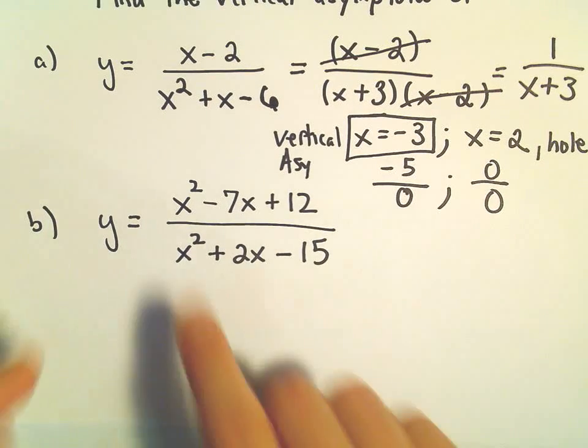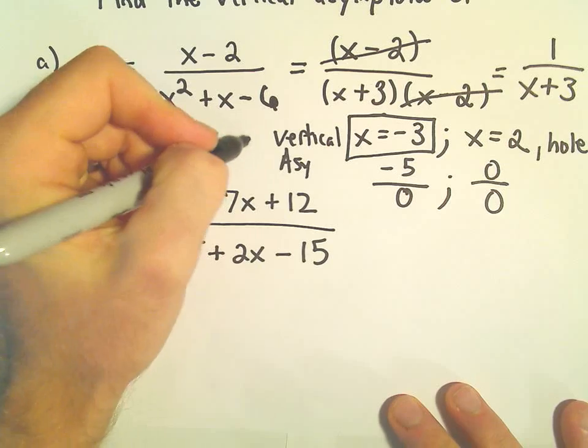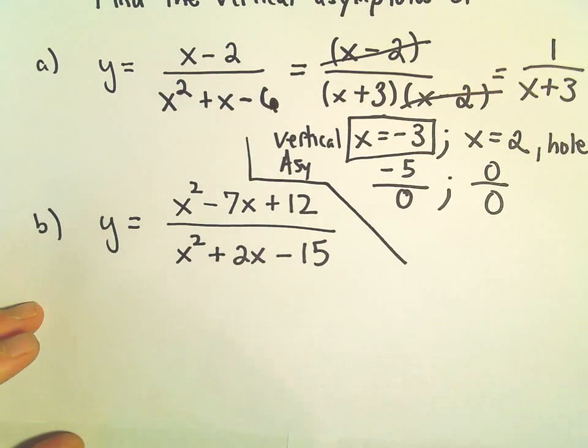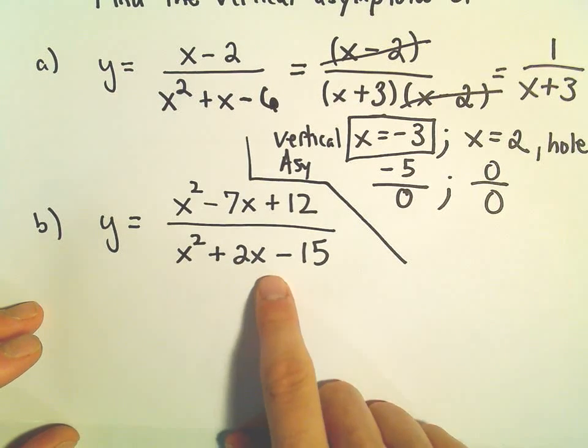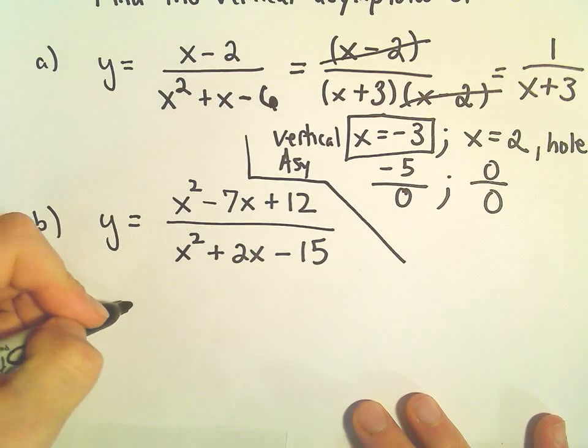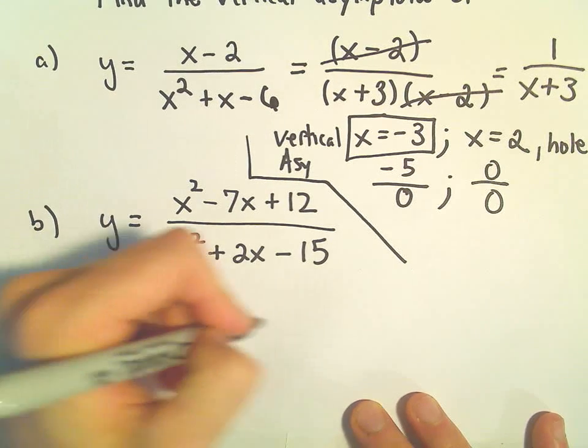So in this case, we've got y equals x squared minus 7x plus 12 over x squared plus 2x minus 15. So hopefully this factors without too much trouble.